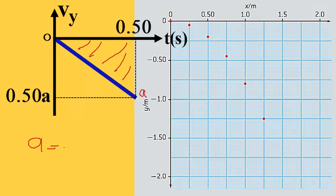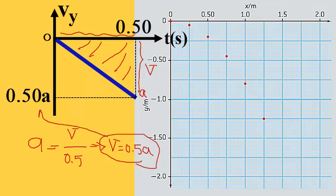Slope is opposite over adjacent, which is something like v over 0.5. If you make a cross product here to rearrange it, you will get v is equal to 0.5 times a, which is written here.